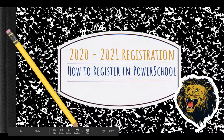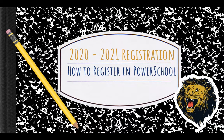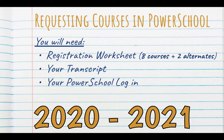Hello and welcome to registration for the 2020-2021 school year. Today we would like to take a few minutes to go over putting your course requests in PowerSchool. Before you begin, you need to gather a few items: your registration worksheet complete with eight courses and two alternates, your transcript, and your PowerSchool login.